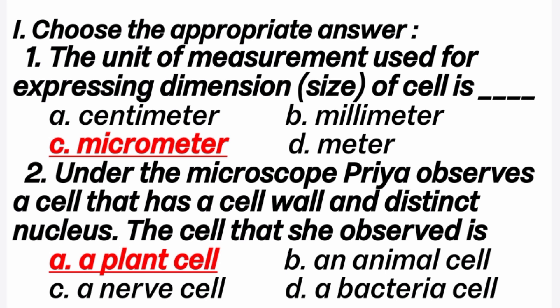First question: the unit of measurement used for expressing dimension of cell is dash. Answer is C option, micrometer. Second question: under the microscope, Priyo observes a cell that has a cell wall and distinct nucleus. The cell that she observed is? Answer is A option, plant cell.